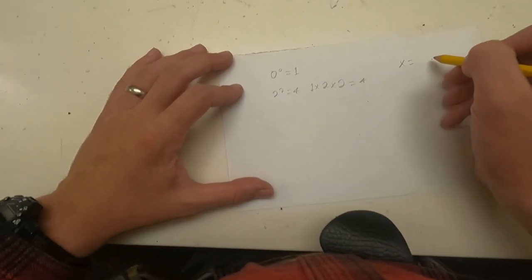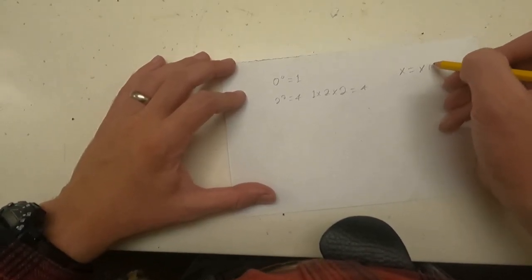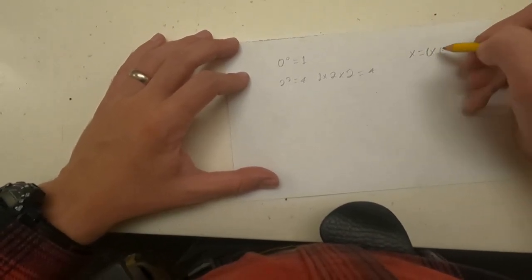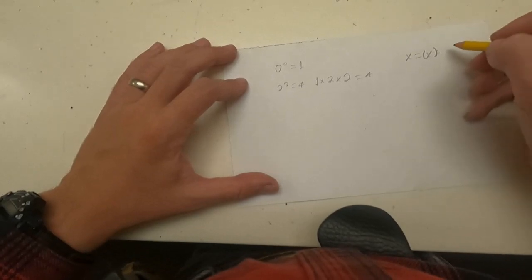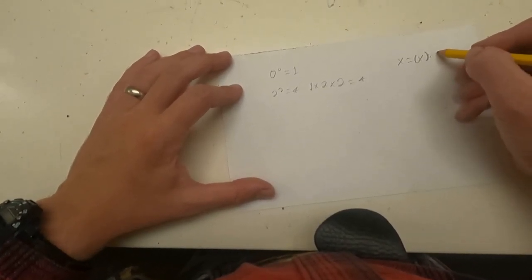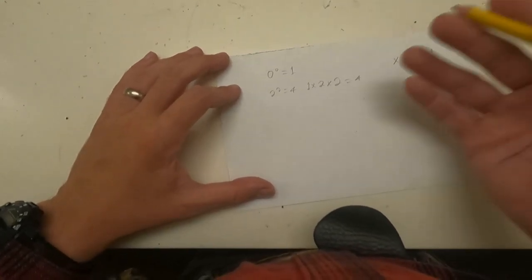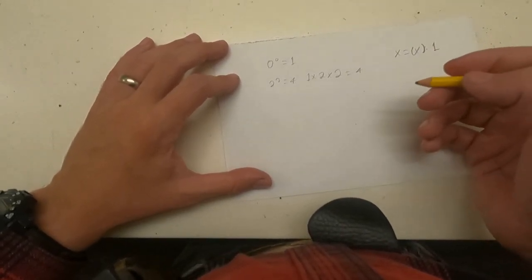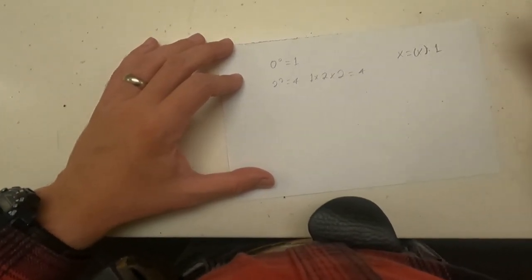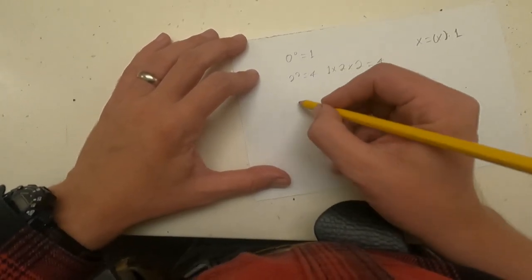x equals x times 1, because that's what x is. I'm switching between arithmetic and algebra now, and I need to use a different term for multiplication. Anyways, that's the way 1 works.